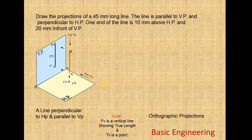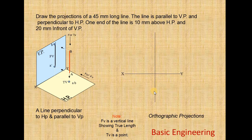Now we draw the orthographic projections. The front view is a vertical line showing the true length, and the top view is a point. We draw the XY line first, then draw the projection line. On this line we draw the projection of line AB — the front view and top view.